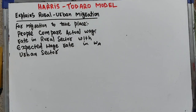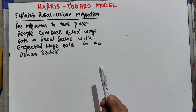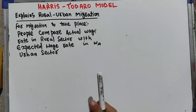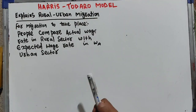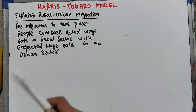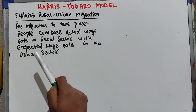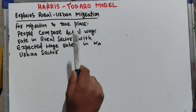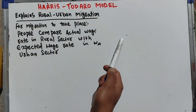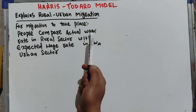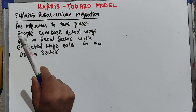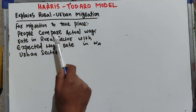In this video we will learn about the Harris-Todaro model of migration. This model was developed by Harris and Todaro in 1970 and explains rural-urban migration.